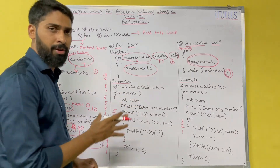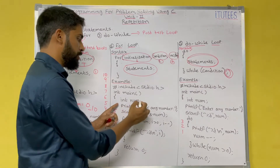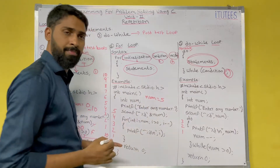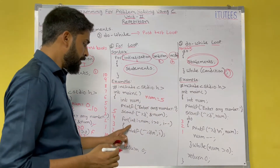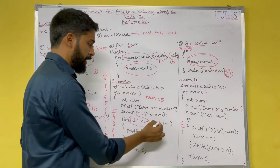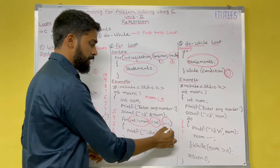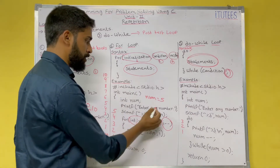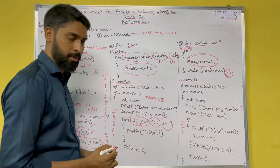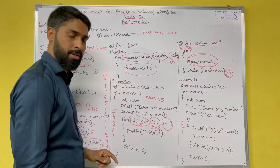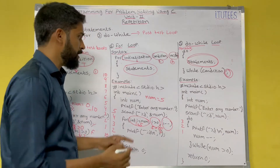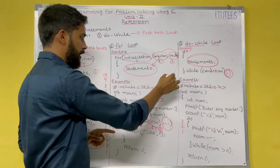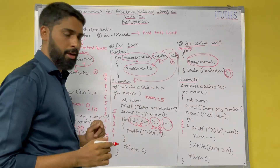Here also, we take the variable NUM and read the value from the keyboard — for example, the value is 5. In the for loop, we write the initialization, condition, and updating (increment or decrement). I take another variable I, set I equal to NUM, which is 5. The condition is 5 > 0, which is true, so we enter into the block. If the condition is false, we exit and terminate the loop.